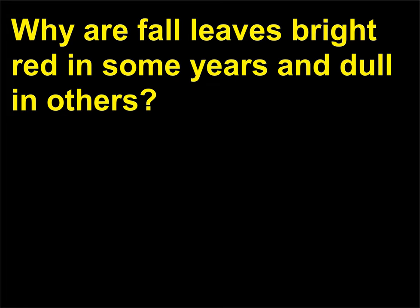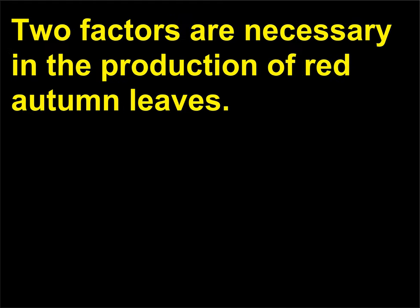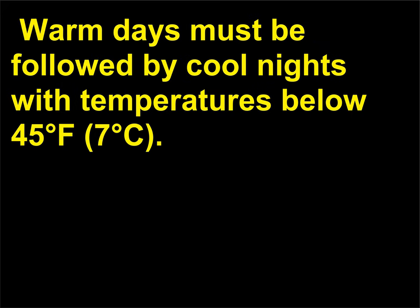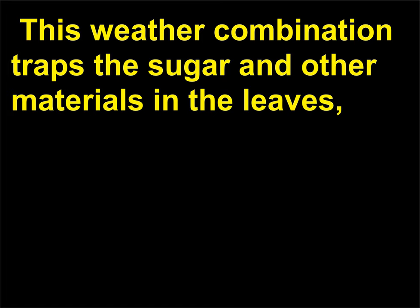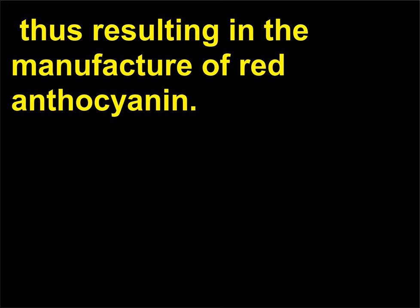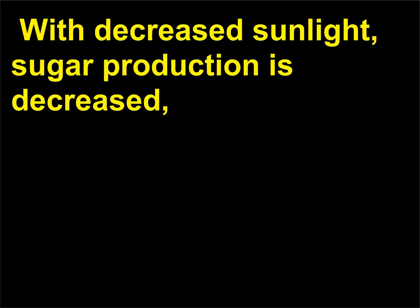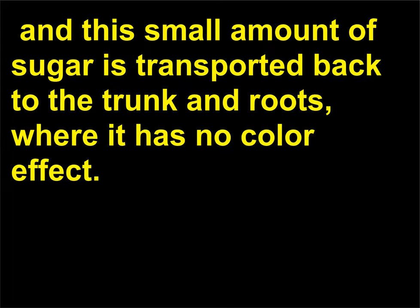Why are fall leaves bright red in some years and dull in others? Two factors are necessary in the production of red autumn leaves. There must be warm, bright, sunny days during which the leaves manufacture sugar, and those warm days must be followed by cool nights with temperatures below 45 degrees Fahrenheit (7 degrees Celsius). This weather combination traps the sugar and other materials in the leaves, resulting in the manufacture of red anthocyanin. A warm cloudy day restricts the formation of bright colors — with decreased sunlight, sugar production is decreased, and this small amount of sugar is transported back to the trunk and roots, where it has no color effect.